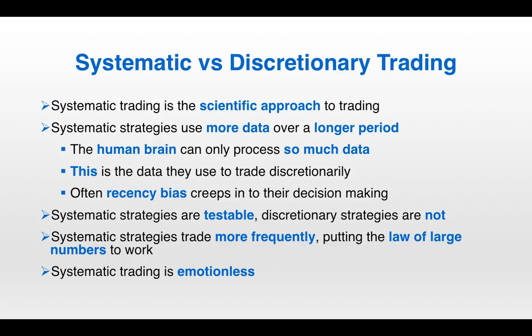Systematic strategies are testable; discretionary strategies are not. If you're trading discretionarily, you won't really know if your strategy is working until you've been trading it for a long time. You can't go back and backtest a discretionary trading strategy — you can't ask whether you would have foreseen the financial crisis in 2008, because you already know it happened. It's already in your brain; you can't take that out.